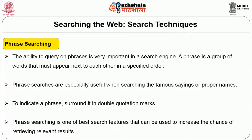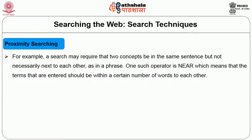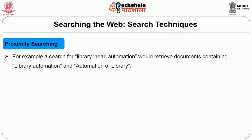Proximity operators are used to specify the relative location of words in a document, facilitating searching for words that must be in the same phrase, paragraph, or sentence. For example, a search may require two concepts to be in the same sentence but not necessarily next to each other. The NEAR operator means that the entered terms should be within a certain number of words of each other — for example, searching 'library NEAR automation' would retrieve documents containing 'library automation' or 'automation of libraries' in both orders.